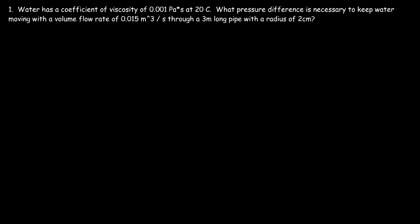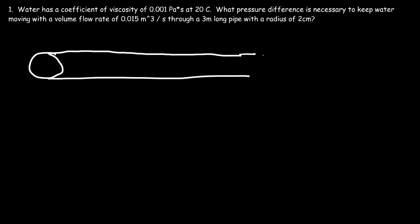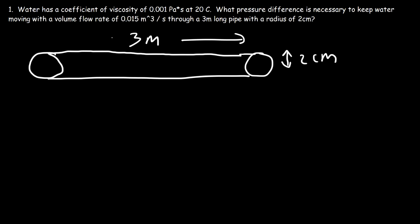Now let's work on a problem. Water has a coefficient of viscosity of 0.001 pascal-seconds at 20 degrees Celsius. What pressure difference is necessary to keep water moving with a volume flow rate of 0.015 cubic meters per second through a 3-meter long pipe with a radius of 2 centimeters? So we have a radius of 2 centimeters, a pipe length of 3 meters, points A and B, and a volume flow rate Q of 0.015 cubic meters per second.